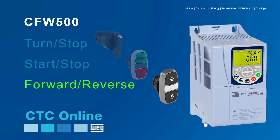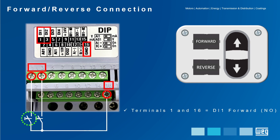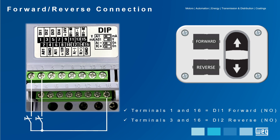Finally, we take a look at the FORWARD and REVERSE function. This command is the combination of TURN STOP with the turning direction. For this, you need two normally open contacts connected to digital inputs. One contact on digital input DI1 terminals 1 and 16, which will receive the signal from the UP arrow button for the FORWARD function, and another contact on digital input DI2 terminals 3 and 16, which will receive the signal from the DOWN arrow button for the REVERSE function. Note that for longer actuation periods, fixed selector switches should be used instead of push-button contacts.